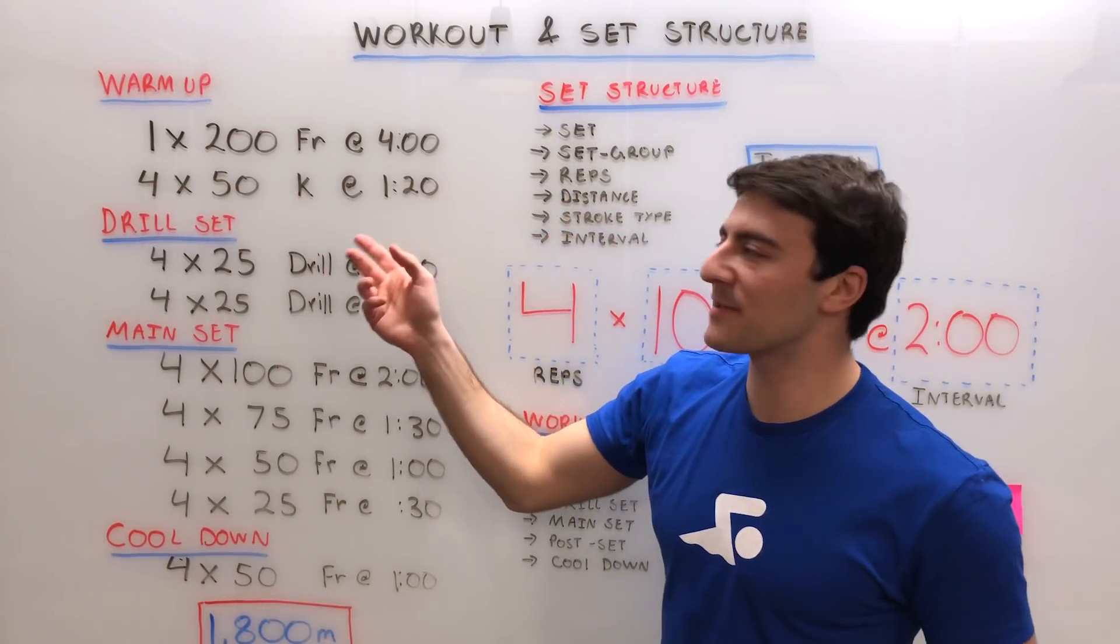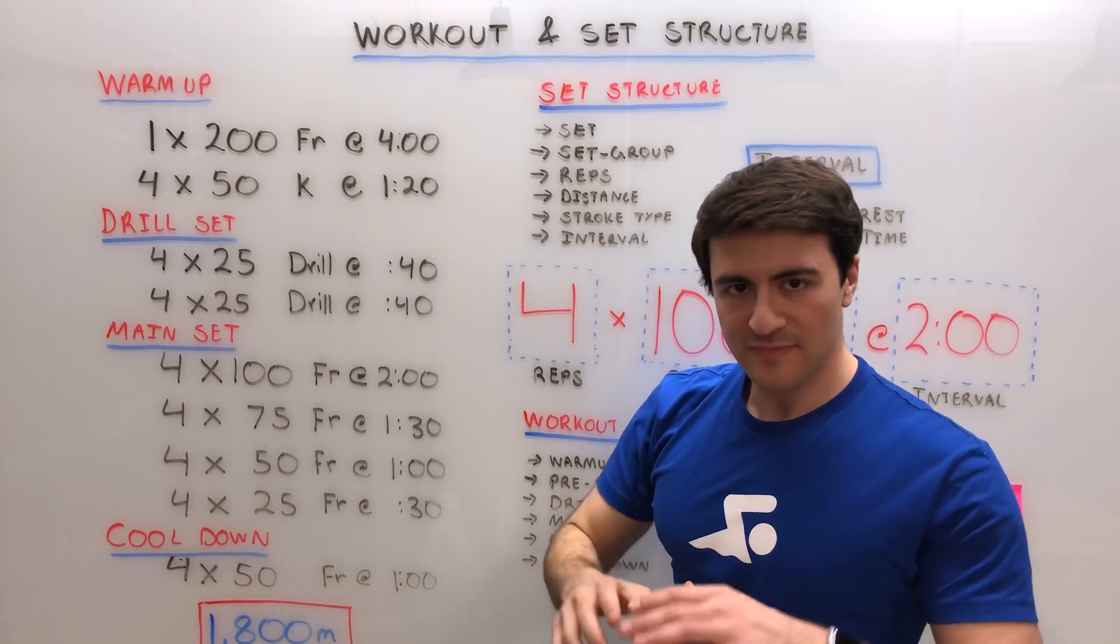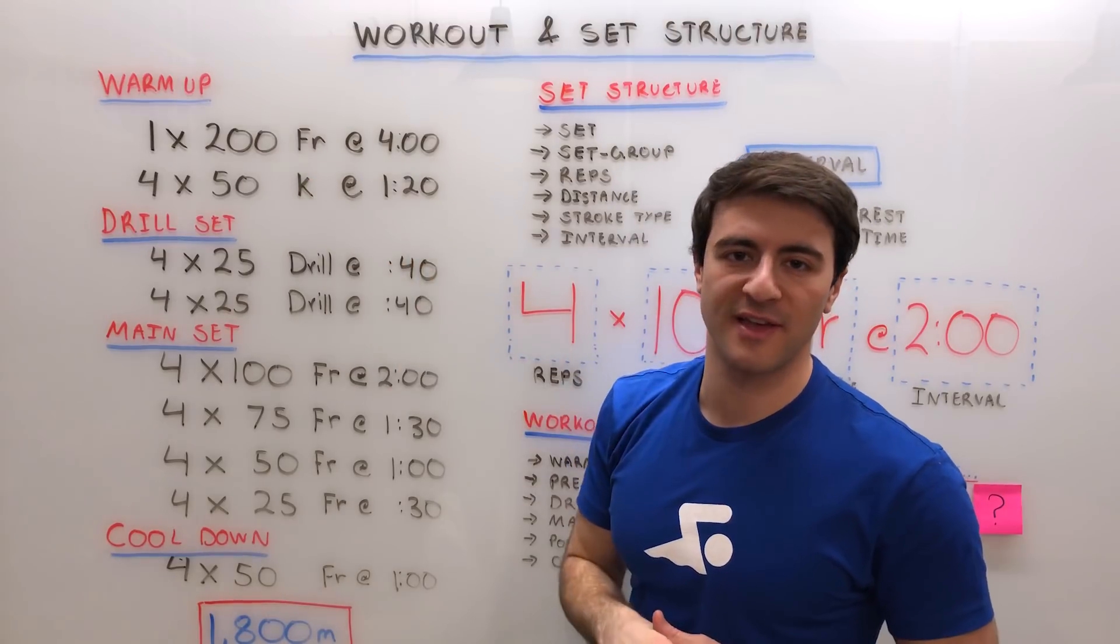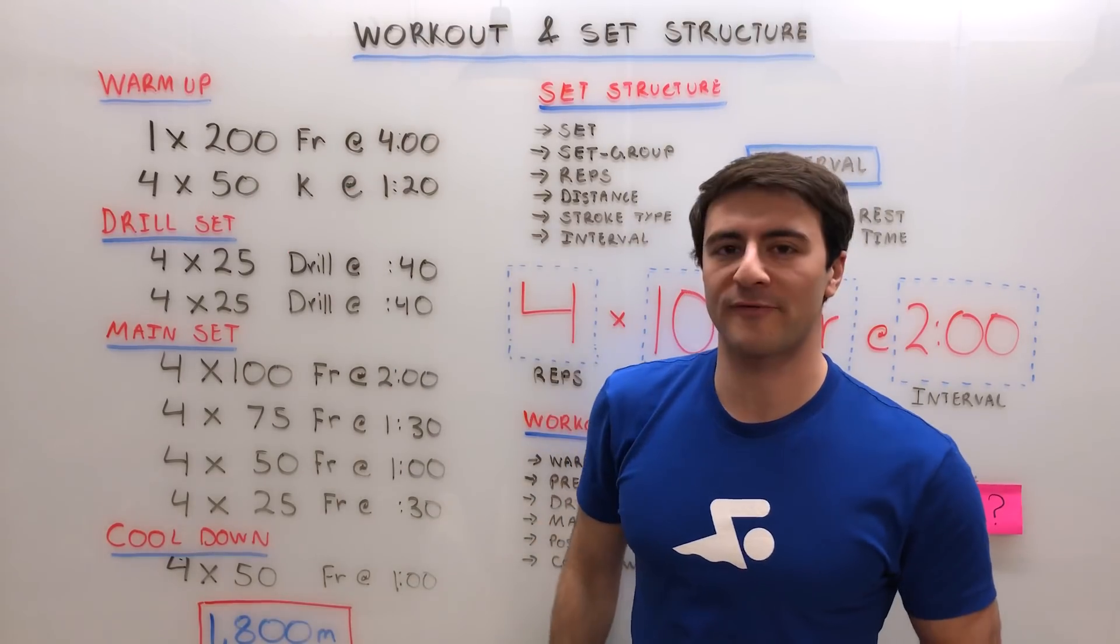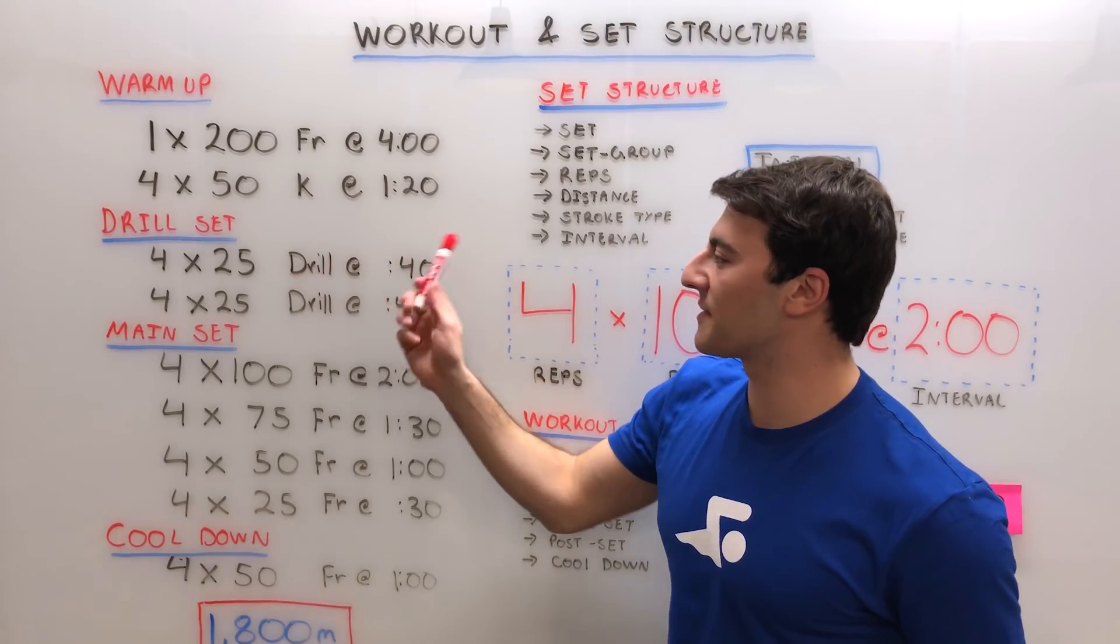After the 200 freestyle, you'll do 4x50s kick on the 1:20. If you notice, each of the different stroke types have their own abbreviation. So FR is short for freestyle, K is short for kick, drill is drill.